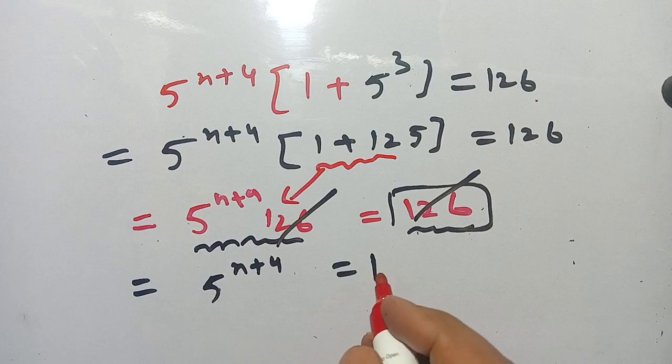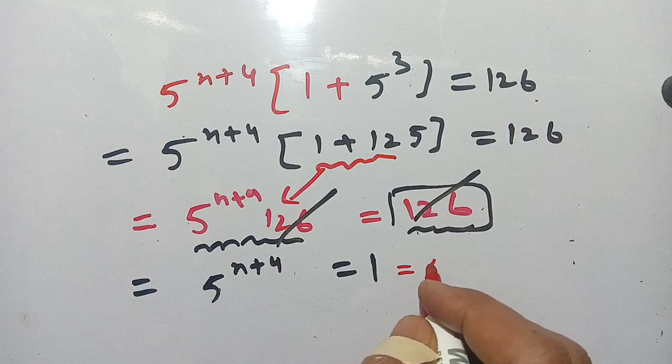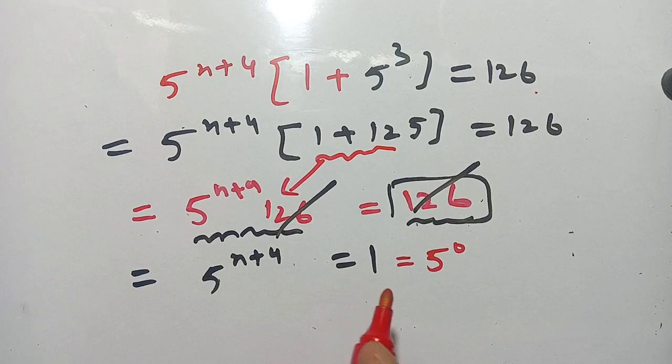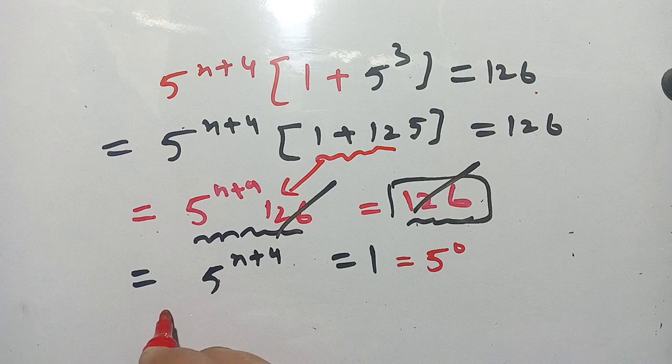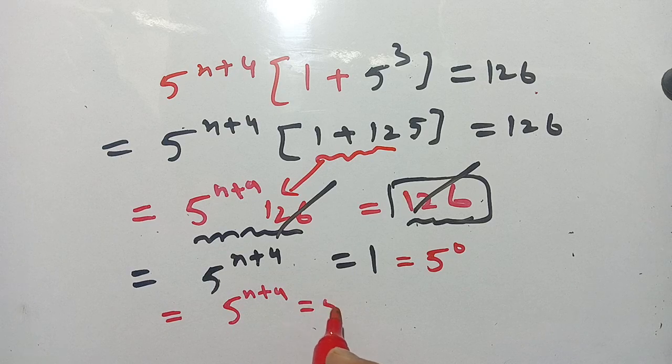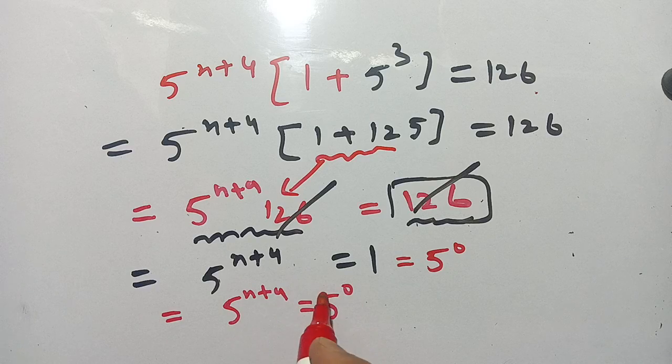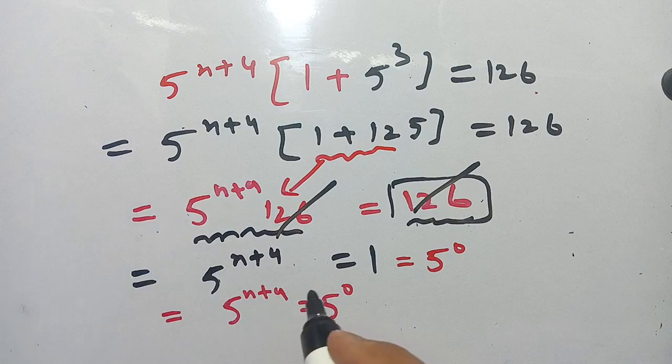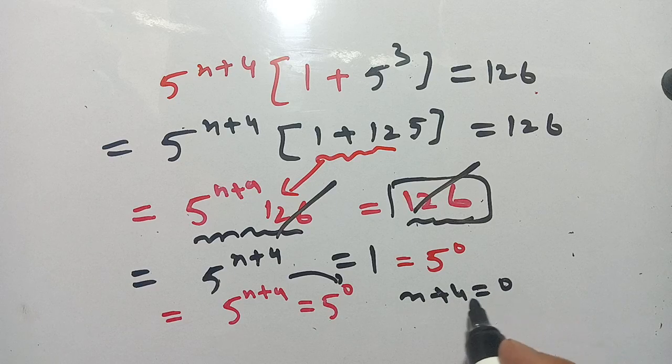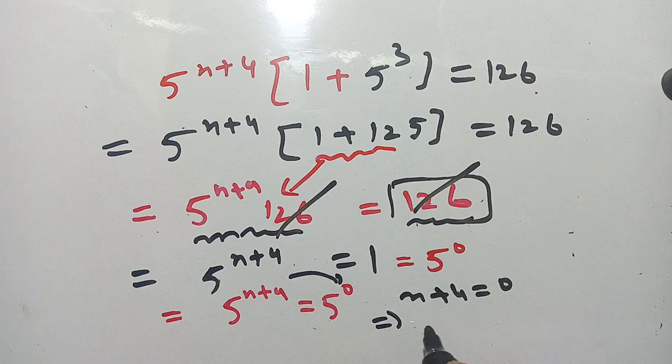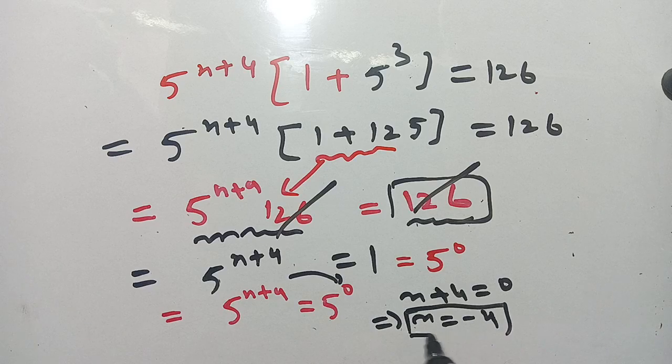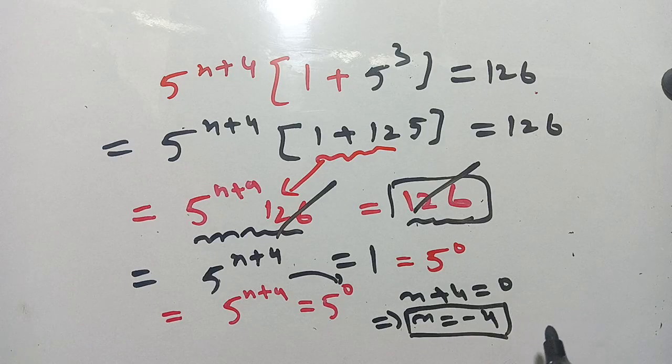Now here, 1 can be written as 5 power 0 because any number power 0 is equal to 1. We get 5 power n plus 4 is equal to 5 power 0, and on comparing the powers we get n plus 4 is equal to 0, which implies n is equal to minus 4, which is the required value of n.